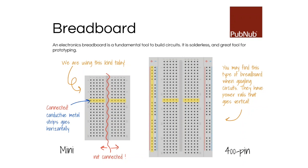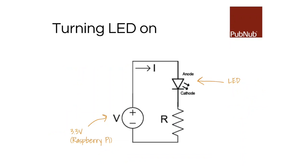If you have a bigger breadboard, it has power rails on the sides — positive and negative — running vertically. The center part works the same as the mini breadboard, with rows connected horizontally. This is the circuit we're going to create: the voltage source is the Raspberry Pi, using an LED and a resistor.